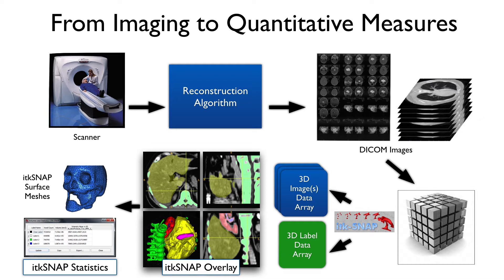DICOM is a very complex format and can represent images in different slicing orientations and different modalities. But as far as ITK-SNAP is concerned, it really expects a Cartesian three-dimensional volume — it thinks of an image as a three-dimensional array of pixels. It can also allow for four-dimensional images, so 3D plus time or diffusion tensor images are supported. However, it does not currently support polar image formats like ultrasound cone images.